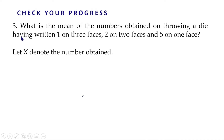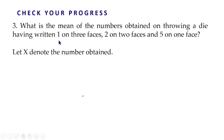The third question: what is the mean of the numbers obtained on throwing a die having written 1 on 3 faces, 2 on 2 faces, and 5 on 1 face? Here we have to find the mean of numbers obtained when we throw a die in which 1 is written on 3 faces, 2 on 2 faces, and 5 on 1 face. Usually in a die we have 1, 2, 3, 4, 5, and 6 each on one face.